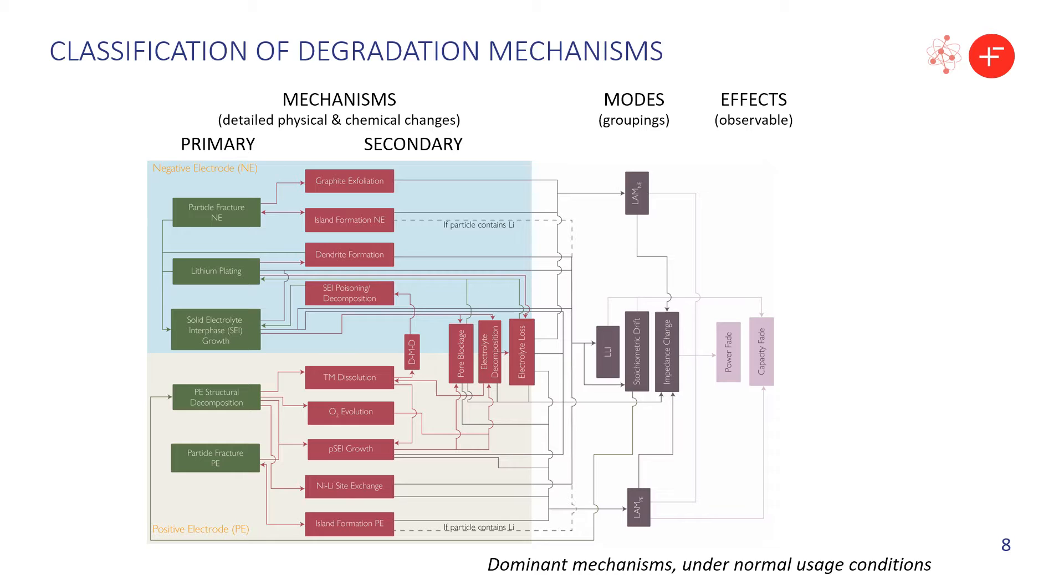The literature describes degradation in three tiers. There are the mechanisms, which are the underlying physical and chemical changes which bring about degradation. These feed into certain modes, which are essentially groupings of degradation mechanisms, and these lead to observable effects. What makes degradation complex is that there are only two directly observable effects, a reduction in power and or a reduction in capacity. But underneath this is a complex web of mechanisms that interact with each other to produce these overall effects.